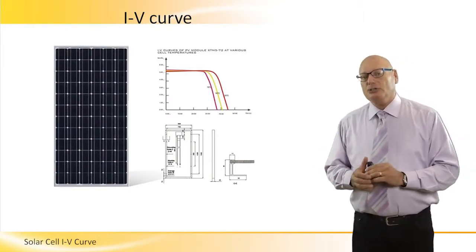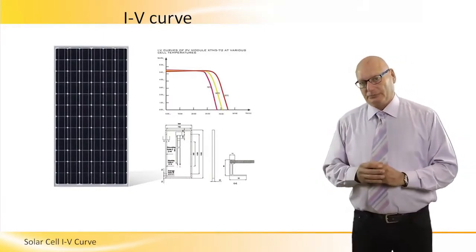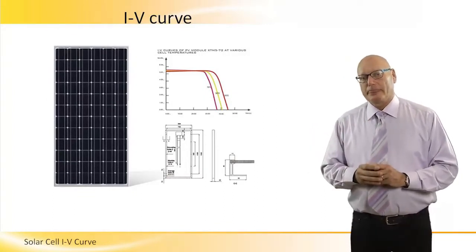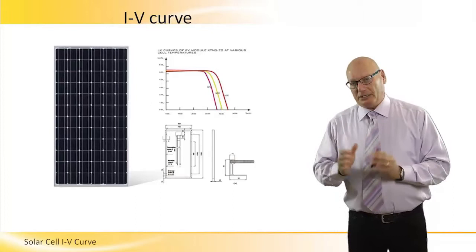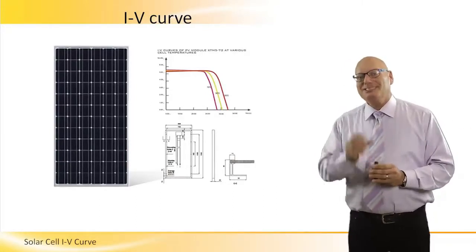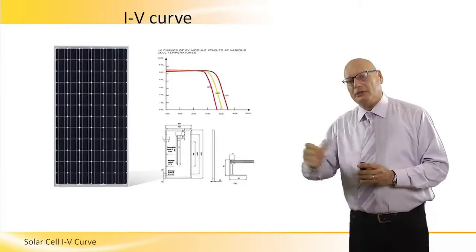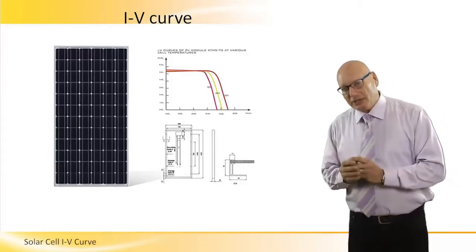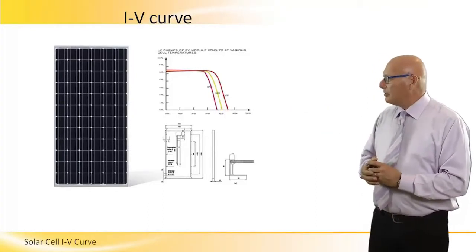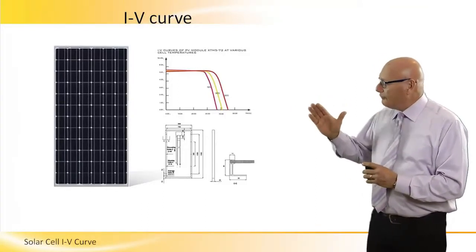An extremely important issue is the I-V curve, the current-voltage curve. Every single panel being produced by manufacturers in a factory has its own personal I-V curve. This I-V curve, as we can see on the top right picture, can vary.